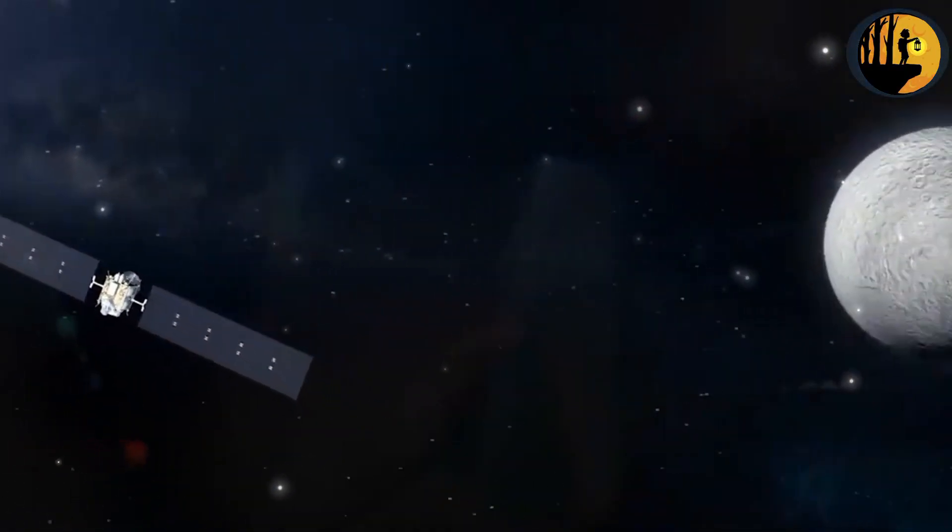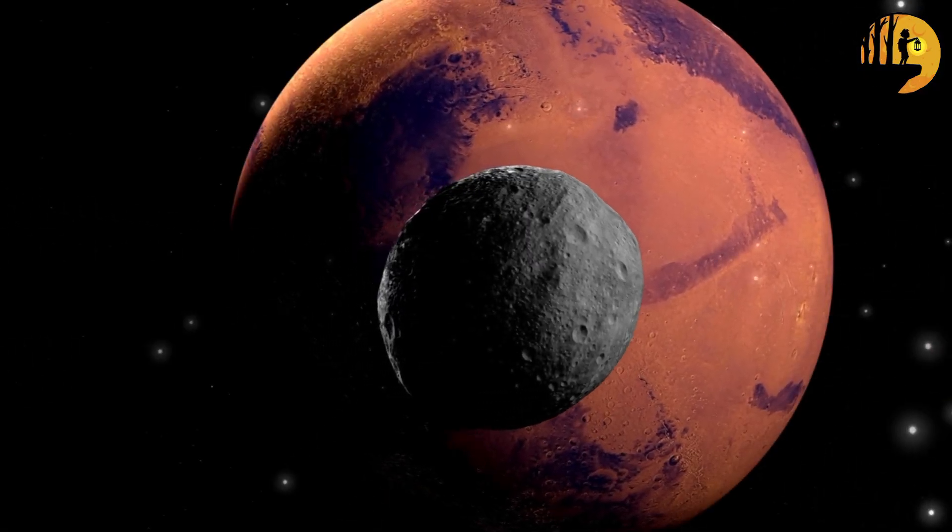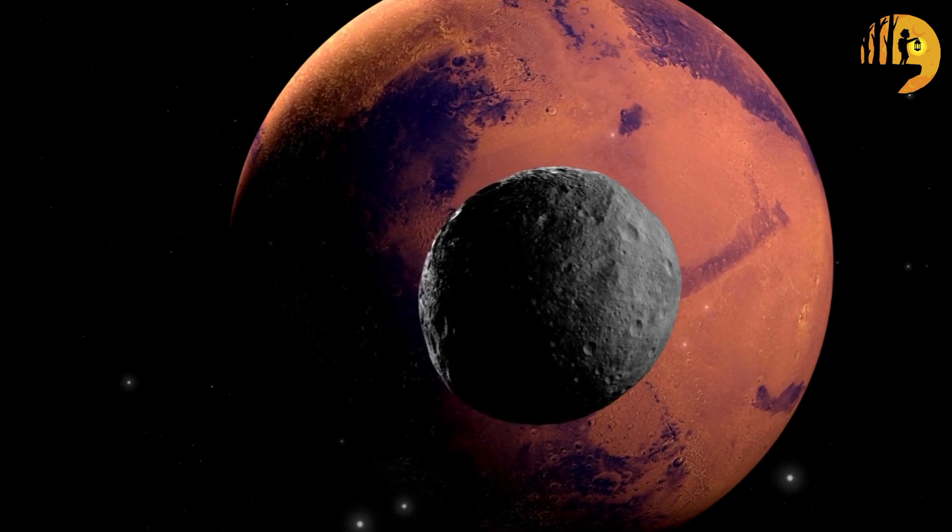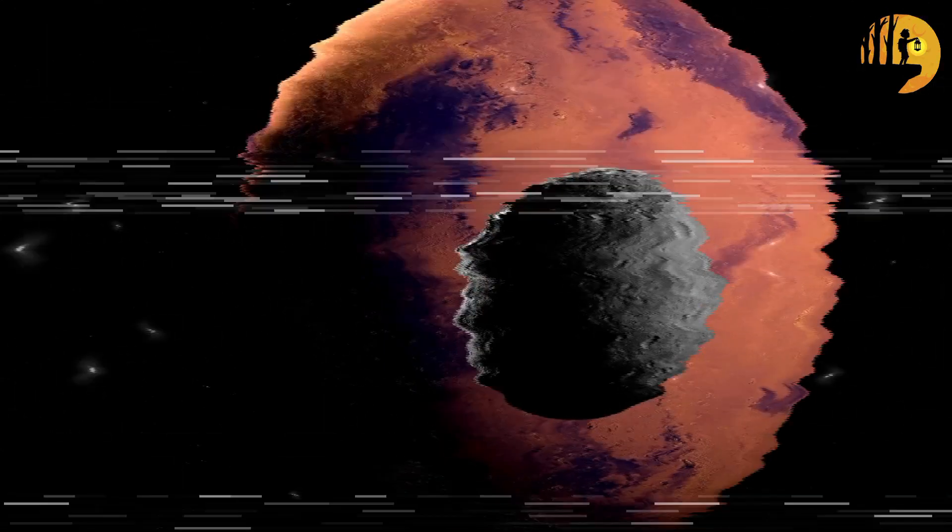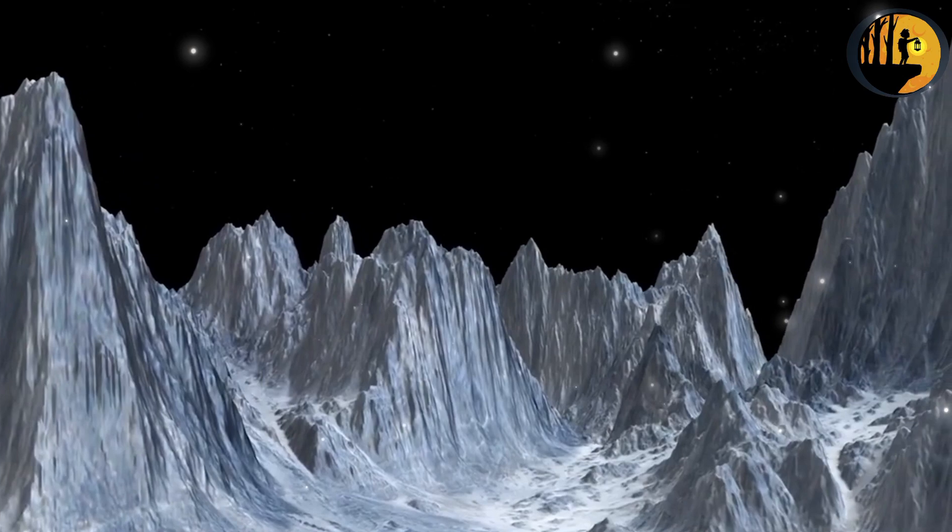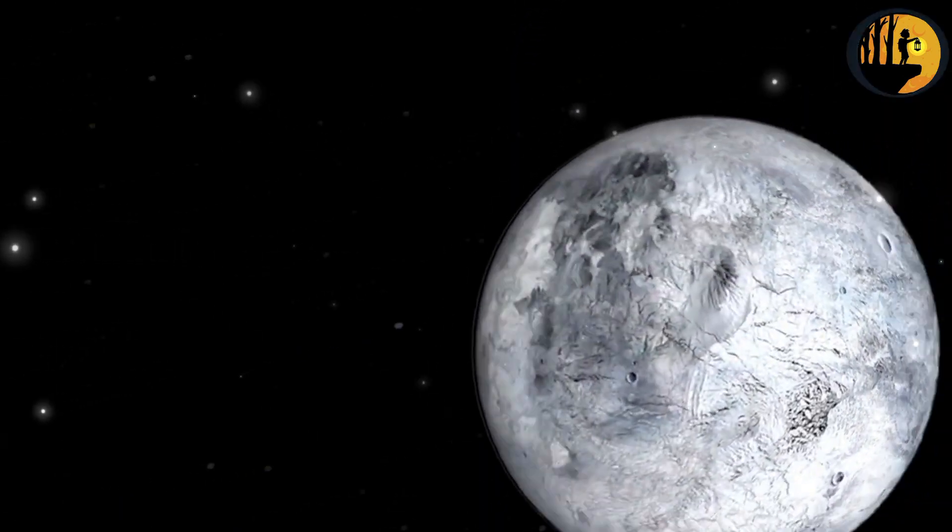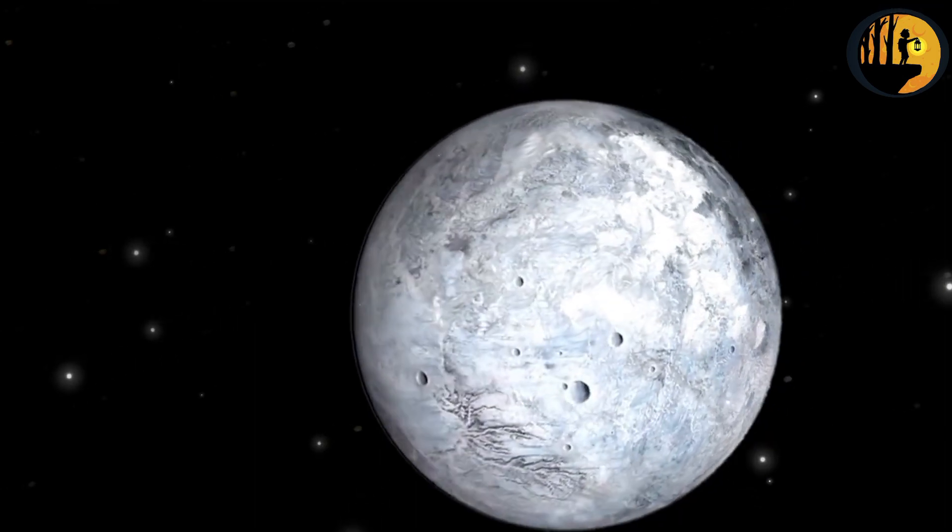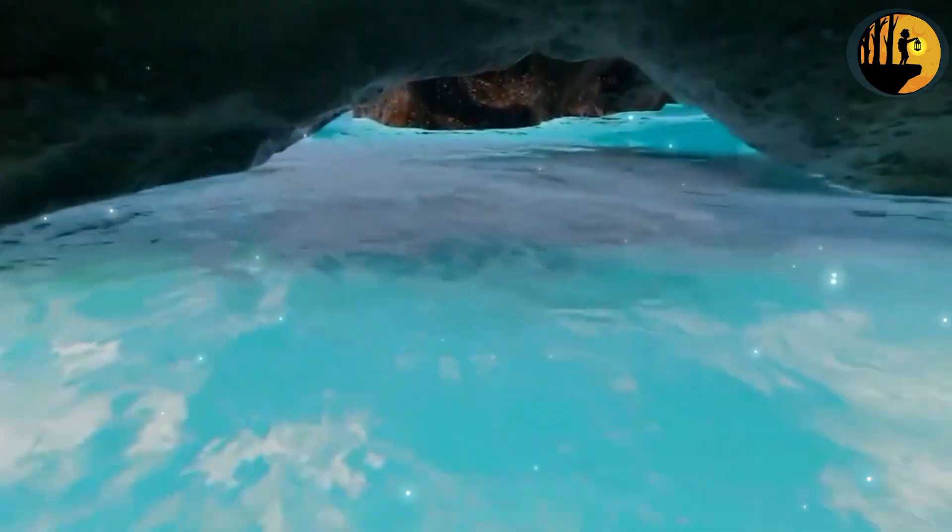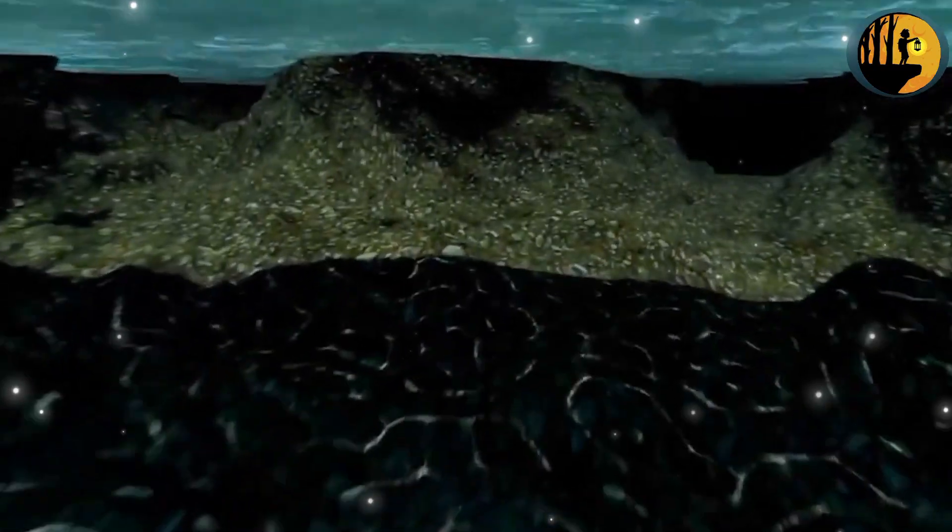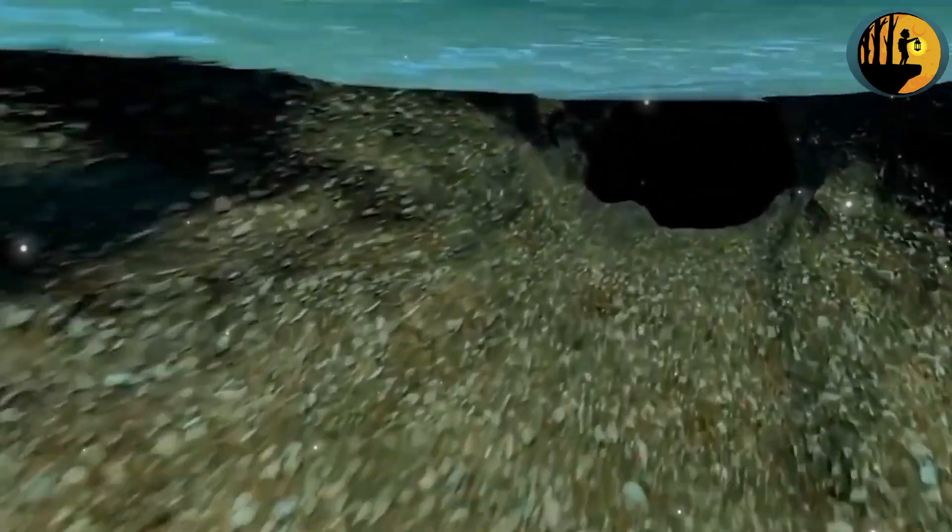The biggest and perhaps the most famous dwarf planet in our solar system is Pluto. Pluto is an intriguing dwarf planet that has captured the fascination of scientists and space enthusiasts alike. Once considered the ninth planet, it was later reclassified as a dwarf planet by the International Astronomical Union IAU in 2006. This reclassification was based on new understanding and criteria for classifying celestial bodies.